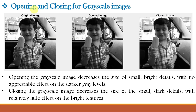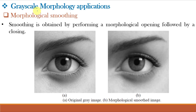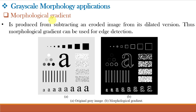Opening and closing also apply to grayscale images. Opening a grayscale image decreases the size of small bright details with no appreciable effect on darker gray levels. Closing a grayscale image decreases the size of small dark details with relatively little effect on bright features. Grayscale and color morphology have numerous applications, such as morphological smoothing — obtained by performing opening followed by closing — and morphological gradient, produced by subtracting an eroded image from the dilated version, which can be used for edge detection.